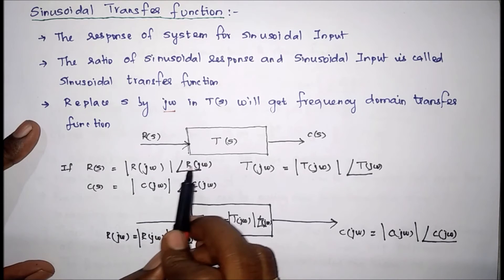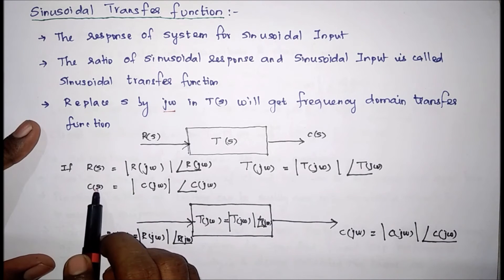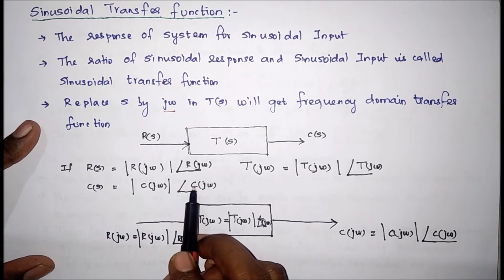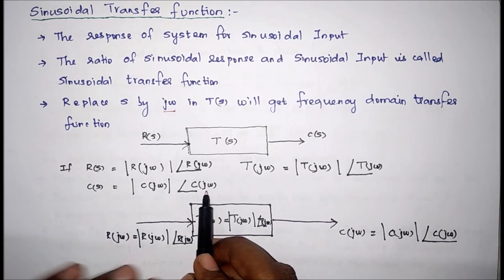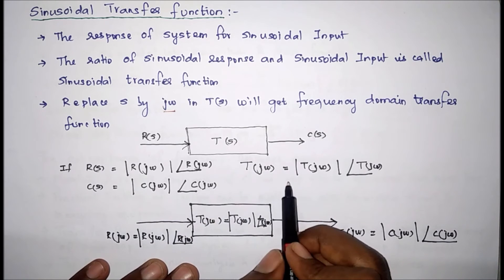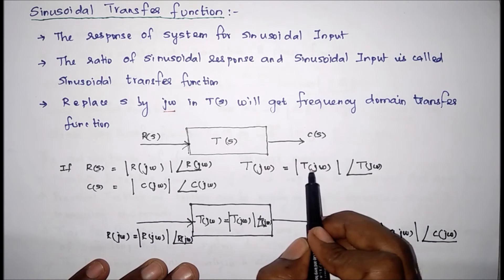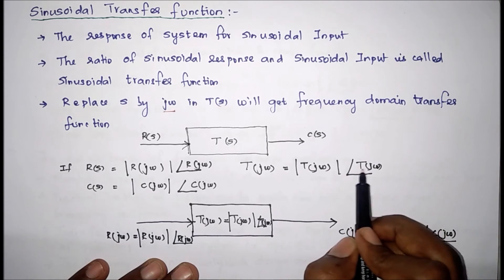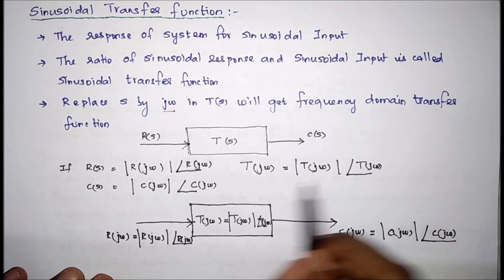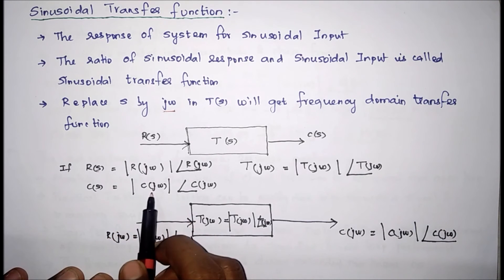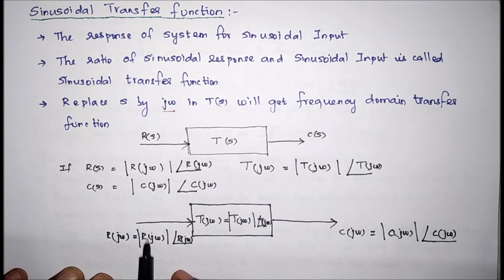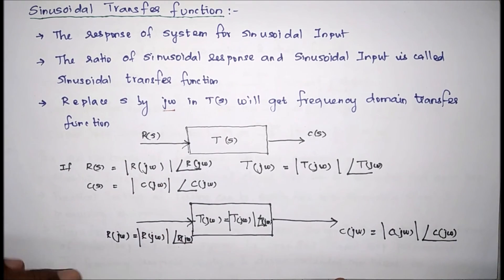After applying jω for s, we have to separate the magnitude and angle. The magnitude of R(jω) and the angle for input R(s). Next, the response magnitude is |C(jω)| and the angle is ∠C(jω). Similarly, for the transfer function with s = jω, the magnitude is |T(jω)| and the angle is ∠T(jω). Now we replace these values — the input, output, and transfer function — into the system to get the entire thing in sinusoidal form.